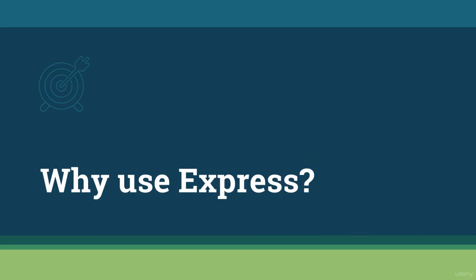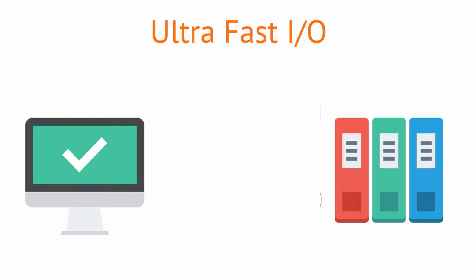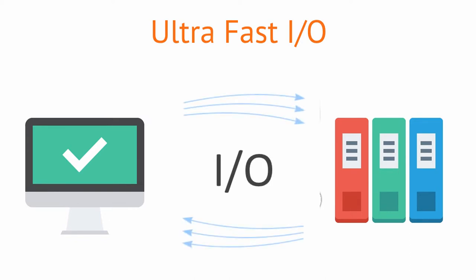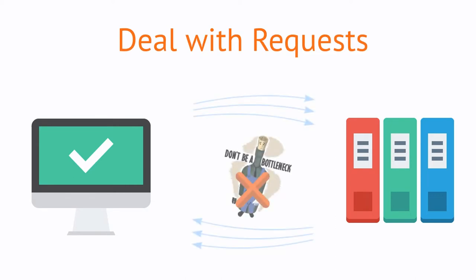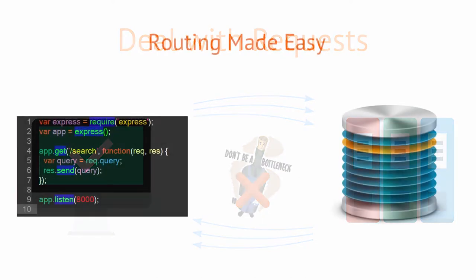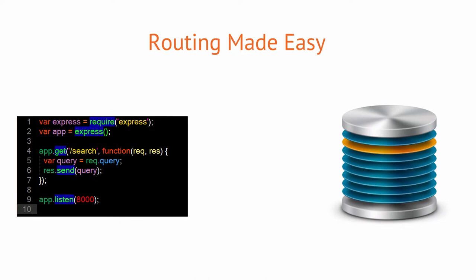Why would we want to use Express? Here's a couple of good reasons. Because Express is built on top of Node, it is the perfect framework for ultra-fast input and output. Node.js is both asynchronous and single-threaded, meaning many requests can be made simultaneously without incurring a bottleneck that would slow down processing. The robust API that ships with Express allows us to easily configure routes to send and receive requests from a front-end and connect to a database.